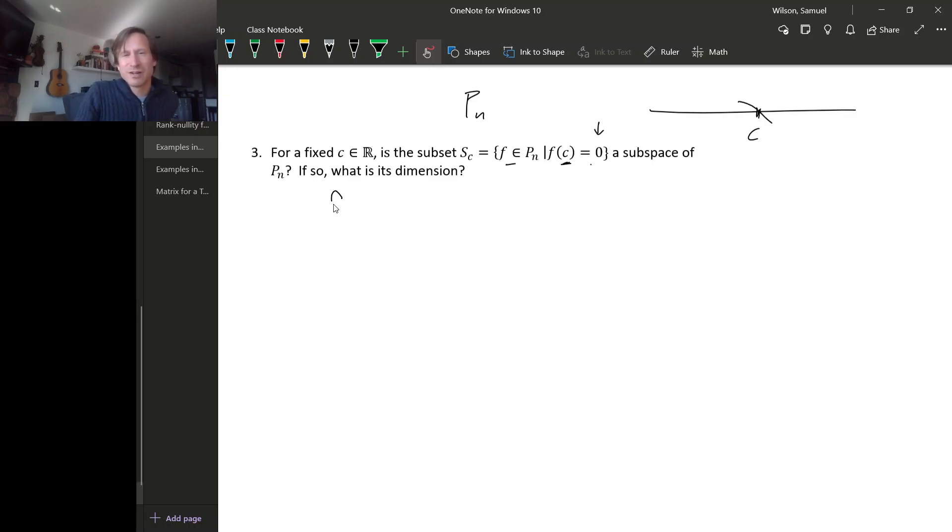If there is such a linear transformation, what does it do to F? Well, one thing that we could do to a polynomial is just plug in a value. Let's plug in the value C. So this is a map from the polynomials of degree less than or equal to N to the real numbers, right? Because when you plug the value C into a polynomial, the result is some real number.